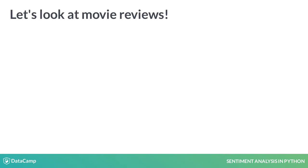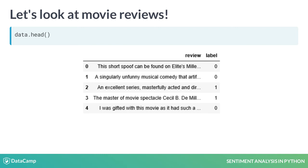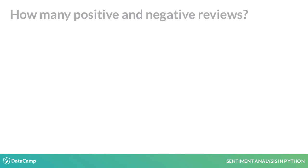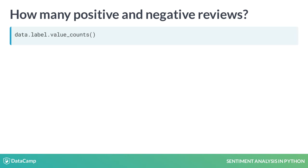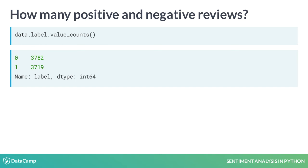Let's look at the first dataset we will use in this course: a sample of IMDB movie reviews. We have two columns — one for the text of the review and a second one called label, which expresses the overall sentiment. The category or class 1 means positive and 0 means negative. To find out how many positive and negative reviews we have, we call the value_counts() method on the label column. The output shows the number of negative reviews (the 0 class) and positive reviews (the class 1).